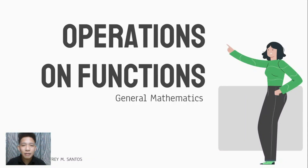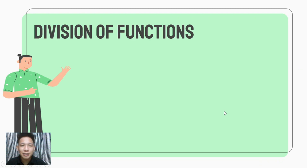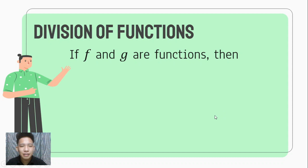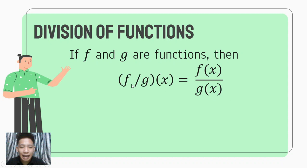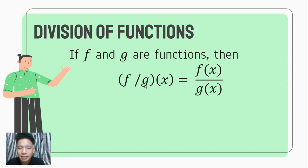Good day everyone. For today's video we're going to have the fourth leg of operations on functions, and that is division of functions. To divide functions, if we are given functions f and g, then f divided by g of x is equal to f of x over g of x, wherein the first function in our statement becomes our numerator or dividend, and the second function becomes our divisor or denominator.